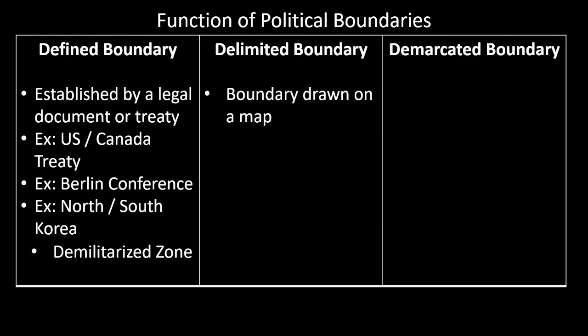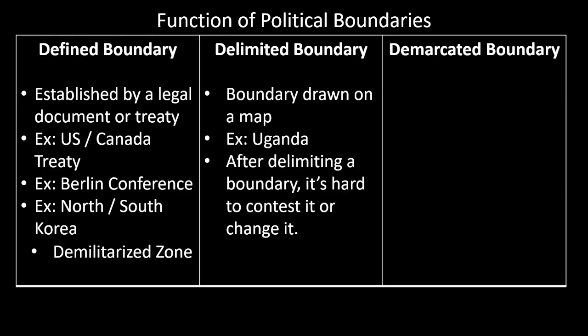Then we have delimited boundaries. These are boundaries drawn on a map — we can see Uganda as an example. Literally everything that is drawn on a map is a delimited boundary. After delimiting a boundary, it's hard to contest it or change it. Boundaries are often contested — sometimes regions are contested because they can be vernacular, so people might say they start somewhere else, but they really don't.